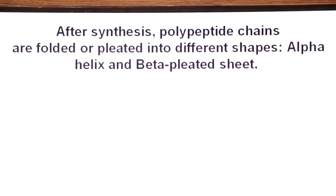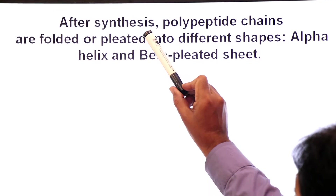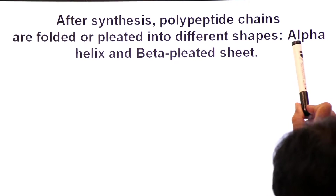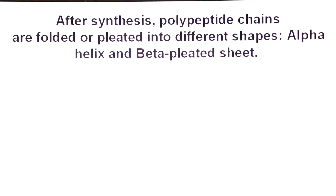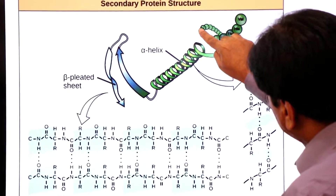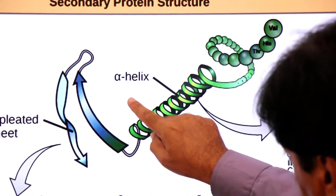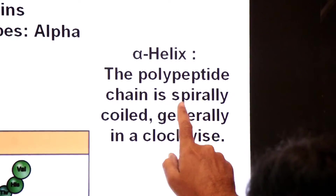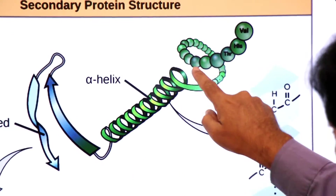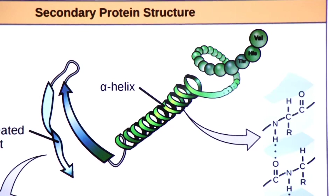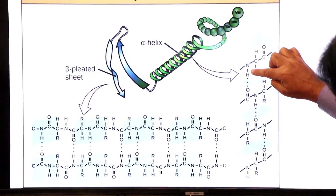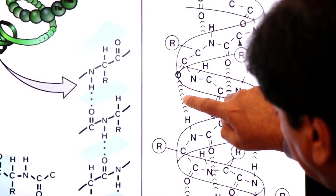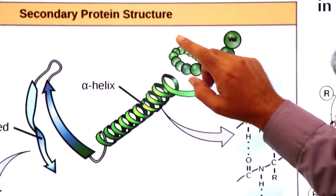After synthesis of the polypeptide primary chain, they are further folded and pleated into different shapes. One shape is the alpha helix and the other is the beta pleated sheet. The primary structure is coiled clockwise in an alpha helix. The polypeptide chain is spirally coiled generally in a clockwise helical fashion — this is called the alpha helix. You can see the amino residue (NH) and the carboxyl group residue (CO) with hydrogen bonds between them stabilizing the structure.